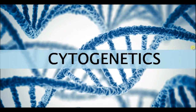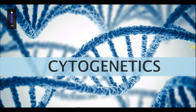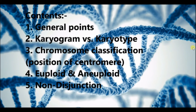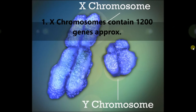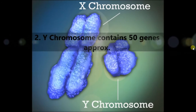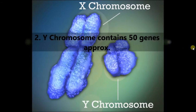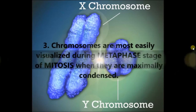Today we are going to discuss cytogenetics. Before we go into details, here are some basic definitions and important points. First, the X chromosome contains approximately 1200 genes; the Y chromosome contains approximately 50 genes. Chromosomes are most easily visualized during the metaphase stage of mitosis, when they are maximally condensed.